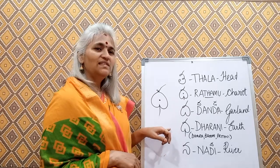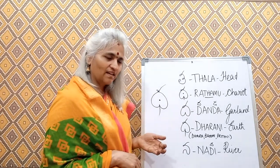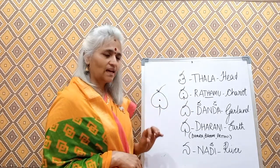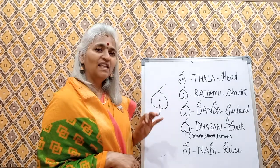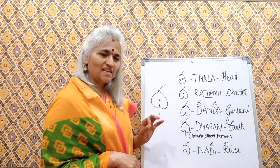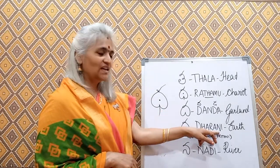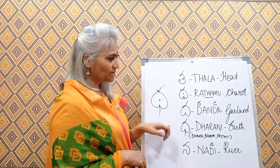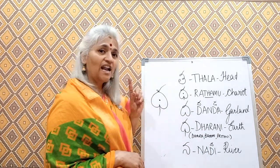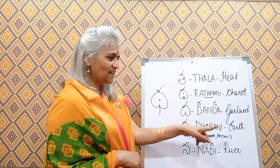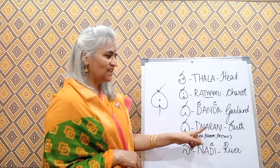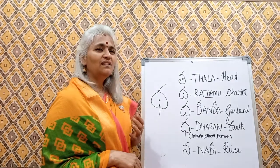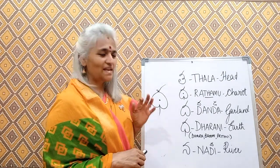The next one is dha — the maha pranam of da. Da, dha. Dharani. This na is the na that touches the palate. Ta-ta-da-dha-na — dha-na. Dharani. Dharani is earth. Mother earth has many names — dharani, dharati, pudumi — many of them. But one of them is dharani.